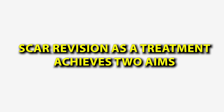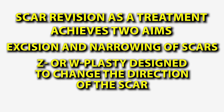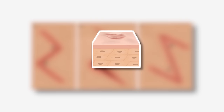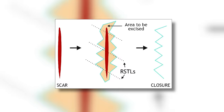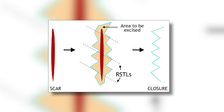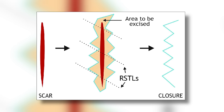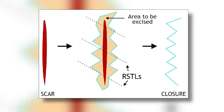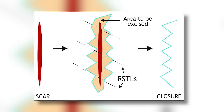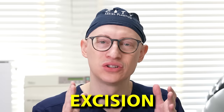Number five is surgery — scar revision. This achieves two aims: excision and narrowing of scars as done for widespread scars, and Z-plasty or W-plasty, designed to change the direction of the scar. Z-plasty is ideal in patients with hypertrophic scars crossing joints or wrinkle creases at a right angle, because it brings the new scar within the relaxed skin tension lines, improving healing. For correction of facial scars, W-plasty can be optimal, as it disrupts the scar into small triangular components that are advanced and interdigitated without any rotation or transposition, resulting in a W-closure pattern creating a scar with better tissue quality that is less visible. Often, a simple elliptical excision is preferred to Z- and W-plasty with a reduced tension closure.